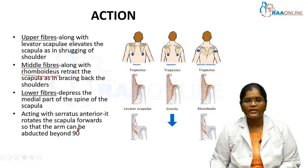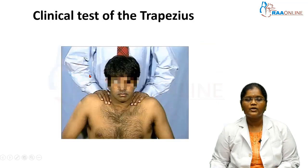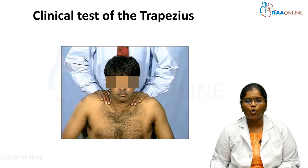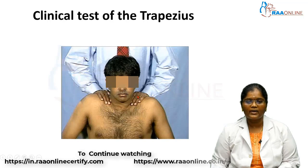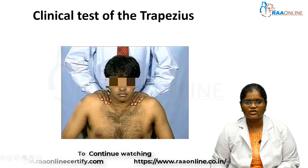When the arm is abducted beyond 90 degrees, trapezius and serratus anterior together facilitate this action. The trapezius muscle is tested by placing the arm on either side of the neck and asking the patient to shrug the shoulders upward. If there is no problem, the trapezius muscle action is considered good.